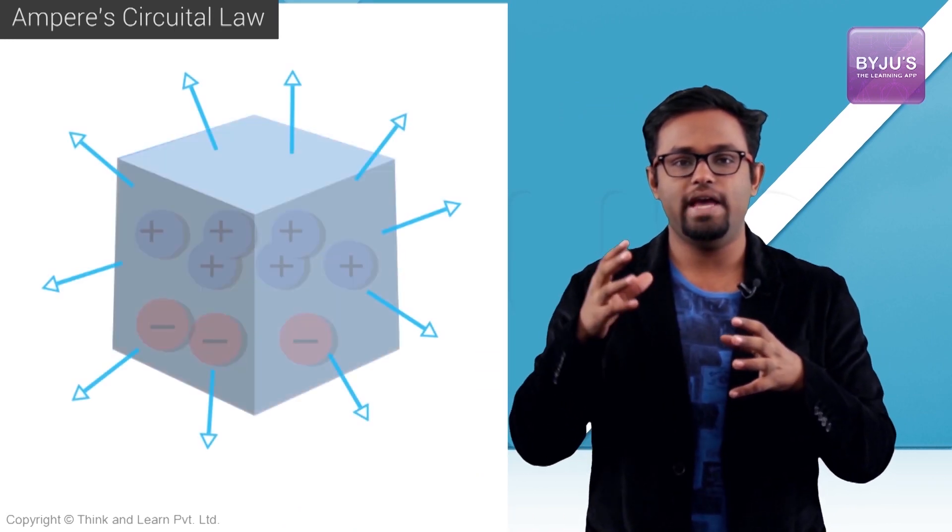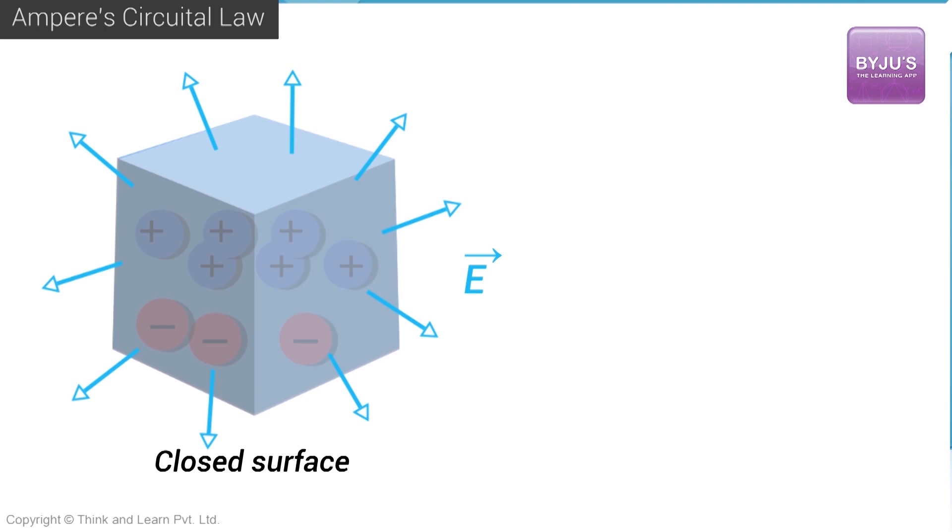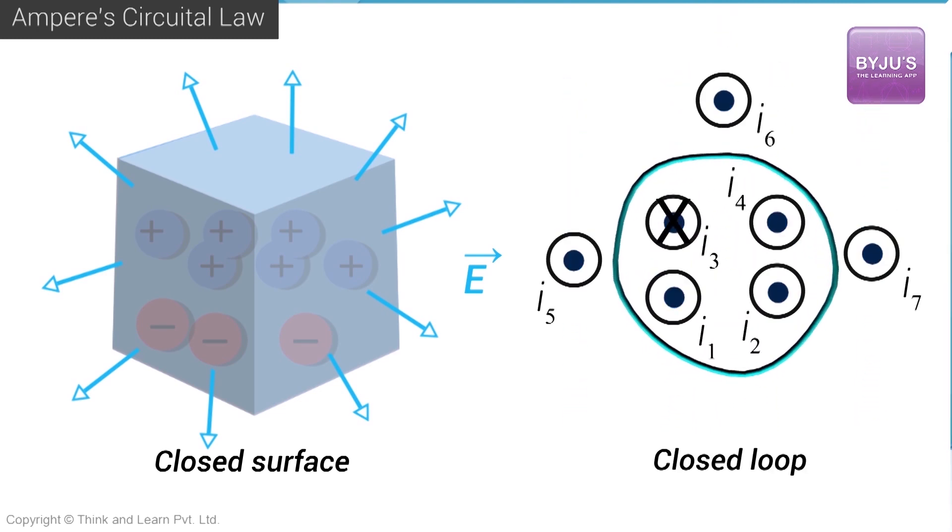Now we have established that what we had as electric flux over a surface, similar thing we have called the circulation of magnetic field but over a loop. So that is one similarity which you should be able to see.